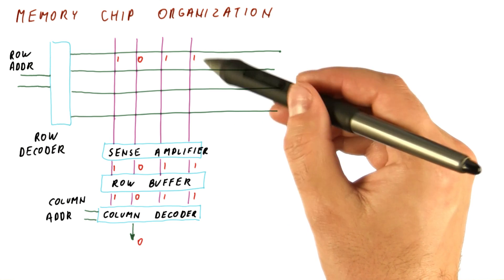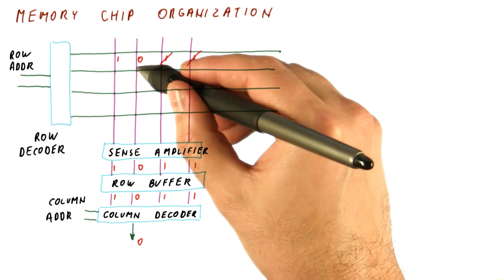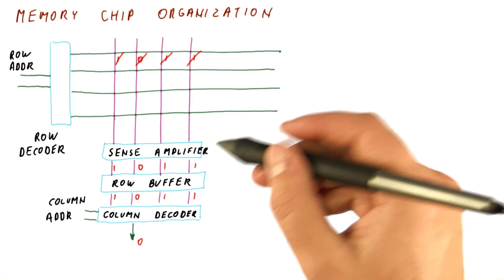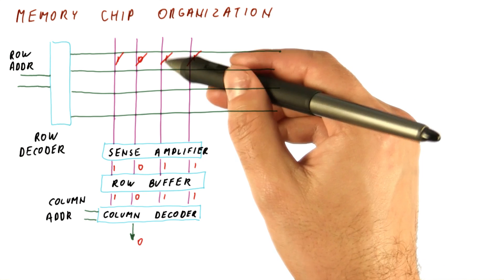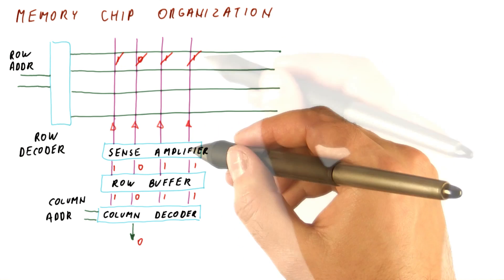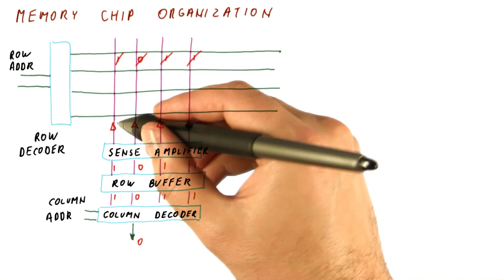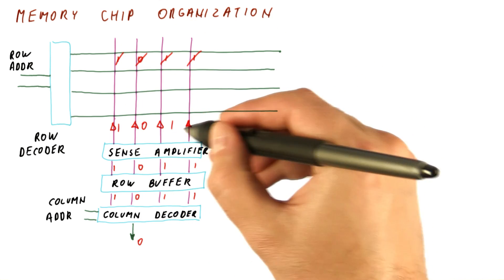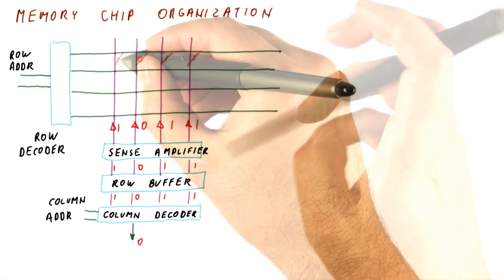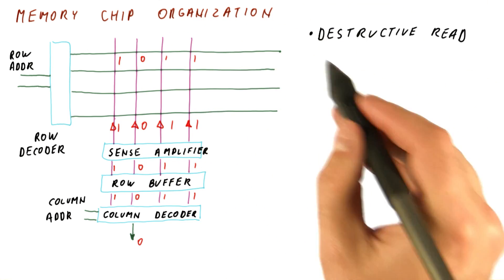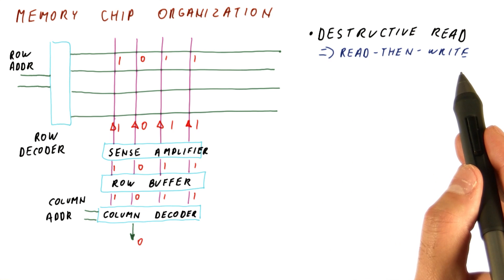Remember that DRAM reads are destructive. Once we do that, we no longer have our bits stored in the cells. So what needs to be done is: after the sense amplifier determines what the correct values of the bits are — and the cells have been exhausted — we reverse the direction and raise each of the bit lines to its proper value. The sense amplifier then drives these correct values back into the cells, and the cells get their values again. Destructive read from DRAM means we have to read and then write each cell.